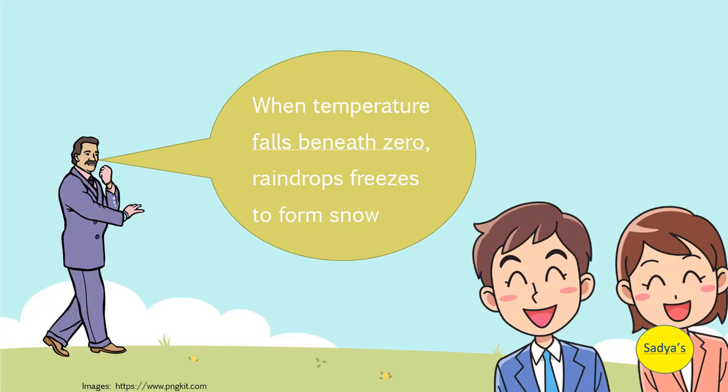And dad did mention the science behind the snowfall. When temperature falls beneath zero, raindrops freeze to form snow. So what does temperature falls beneath zero mean?